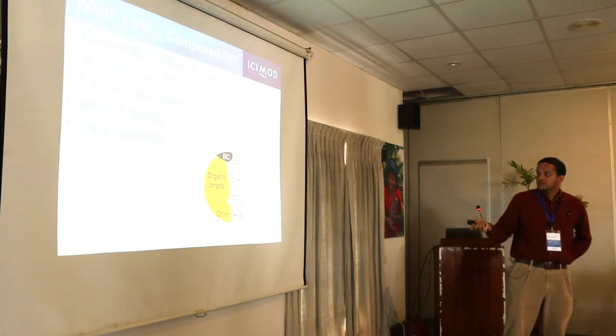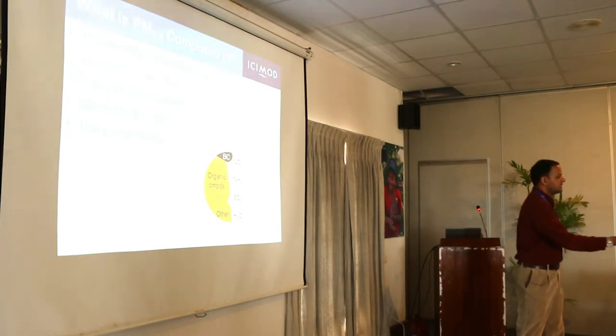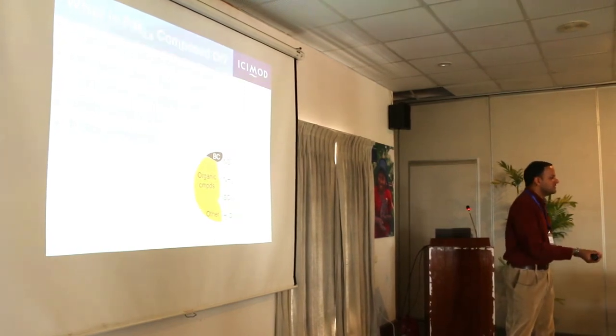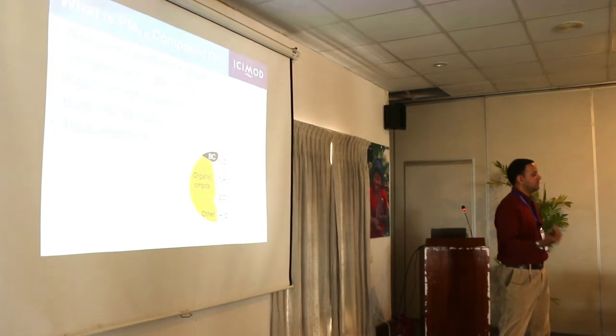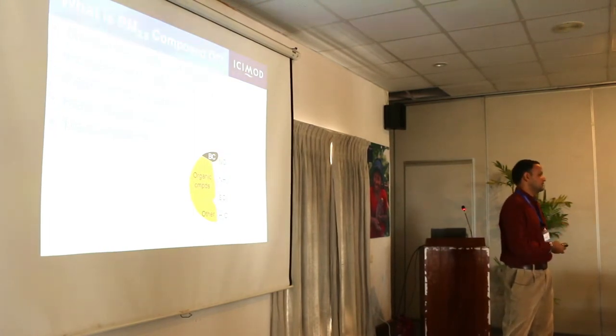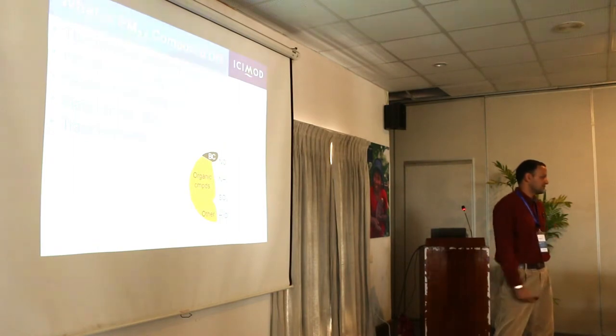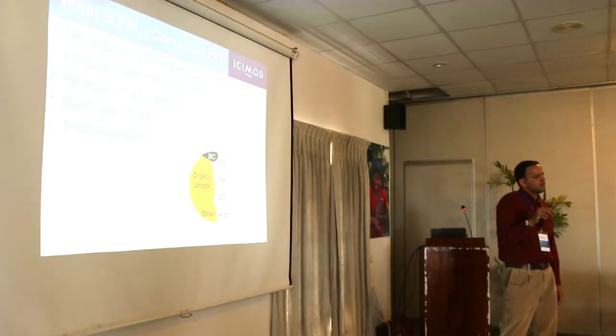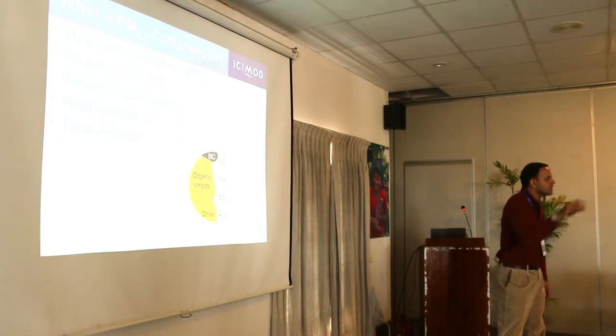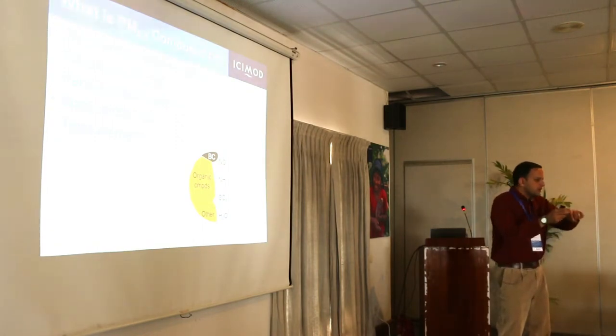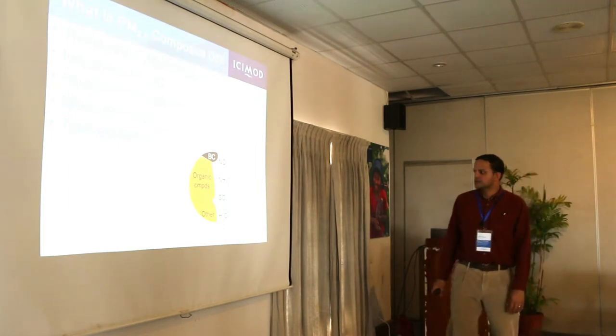However, chemical composition cannot tell you geographically where the pollution came from, because wood burned in a cooking stove in Nepal may not differ much from wood burned in India — the chemical composition is very similar. For geographic source attribution, the only current method is mathematical modeling, tracking pollution from its source to the destination, as well as backward wind trajectory analysis, integrating wind fields backward in time to determine where an air parcel originated.